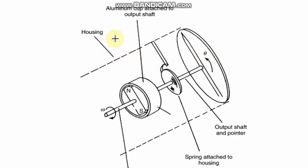This is another waveform of eddy current tachometer. Here you will be able to watch that this portion is the rotating shaft. With this rotating shaft, a magnet is attached which will also rotate if the shaft rotates. This magnet is covered with an aluminium cup attached to the output shaft.